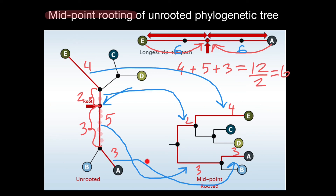This type of unrooted tree also shows the amount of change, and we assume that the amount of change is going to be the same along all this time, along all these taxa — which is usually not true. Some taxa may develop faster than the rest, even during the same period of time, because these taxa were under pressure, which can include environmental factors or competition.